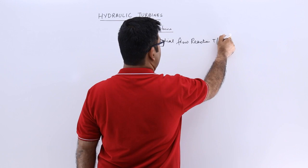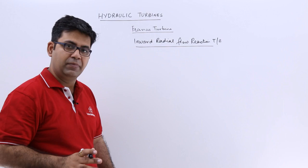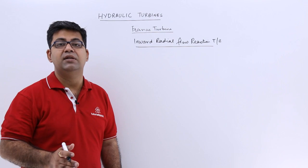The velocity diagram should be similar to what we did in the previous video. The only difference is that the discharge at the outlet of this turbine is radial in direction.